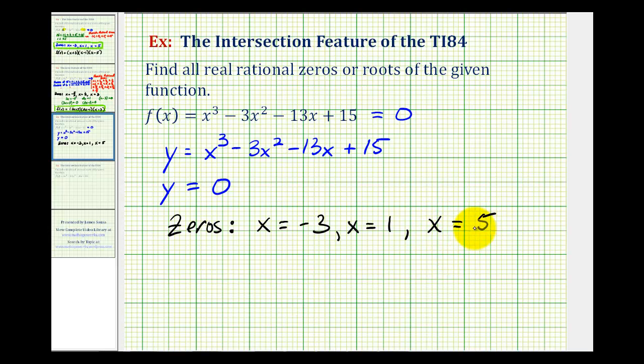Now I also want to make the connection between having these zeros and finding the factors of our polynomial function. If x equals negative three is a zero of the function, then x plus three must be a factor of the function. Notice if we substitute negative three here, we have a factor of zero.